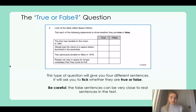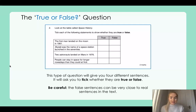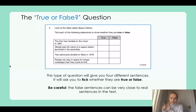This type of question will give you four different sentences from the book and it will ask you to tick whether they are true — correct — or whether they are false — incorrect. You need to be careful because lots of times the false sentences can be very close to the real sentences in the text. So you need to really read them carefully, try and find them in the text, and think: does that match up to what the text is saying? If it doesn't, it's false; if it does, it's true.